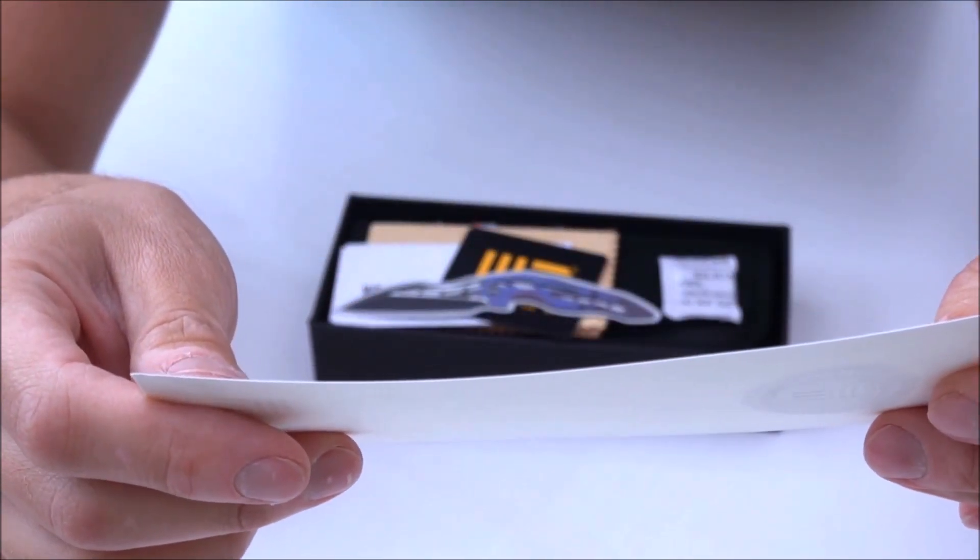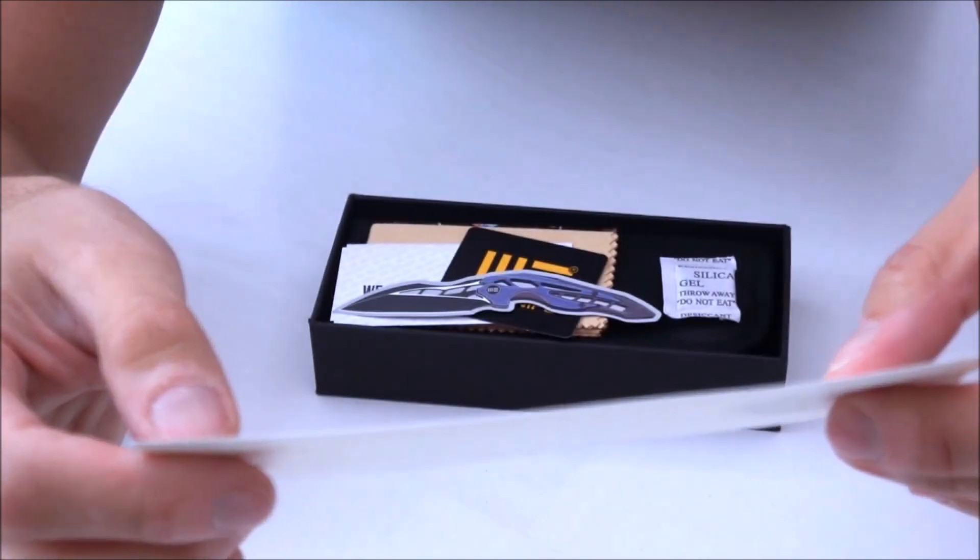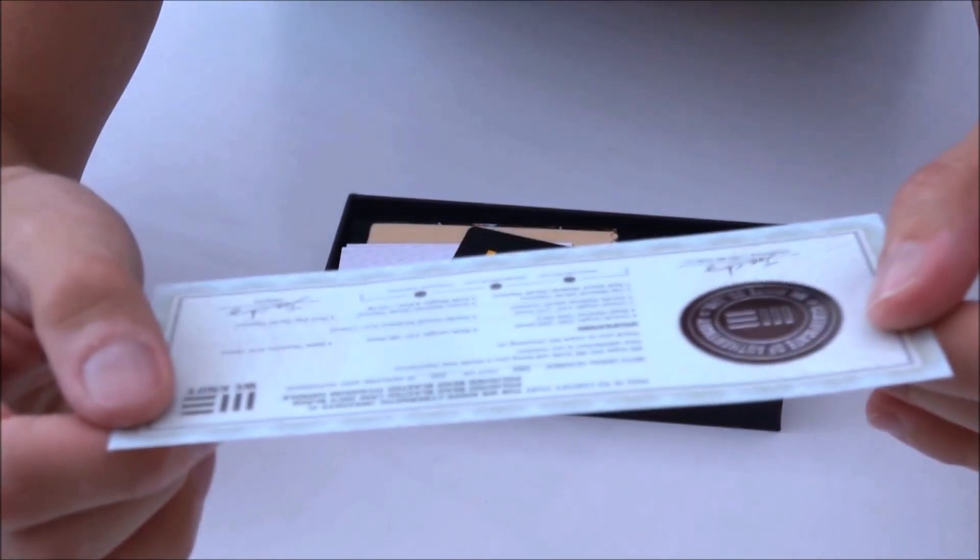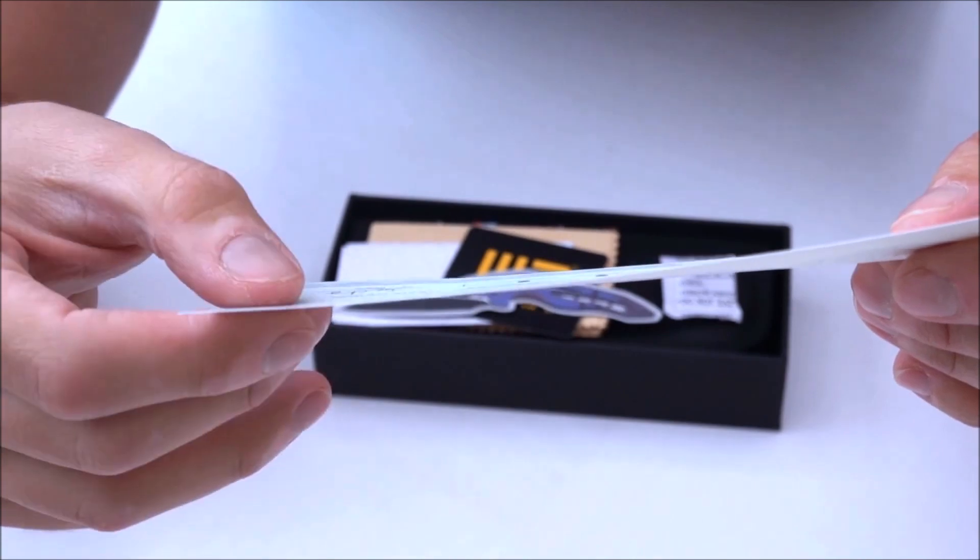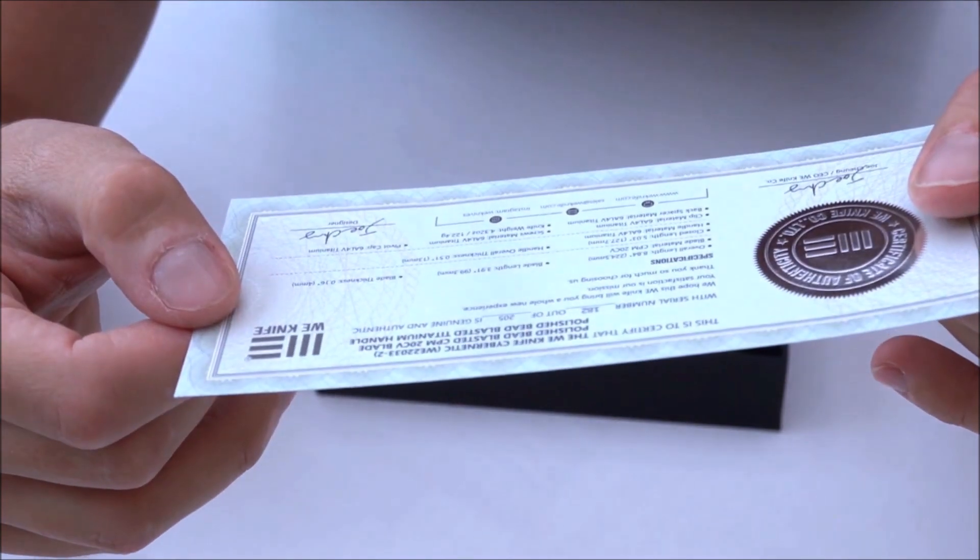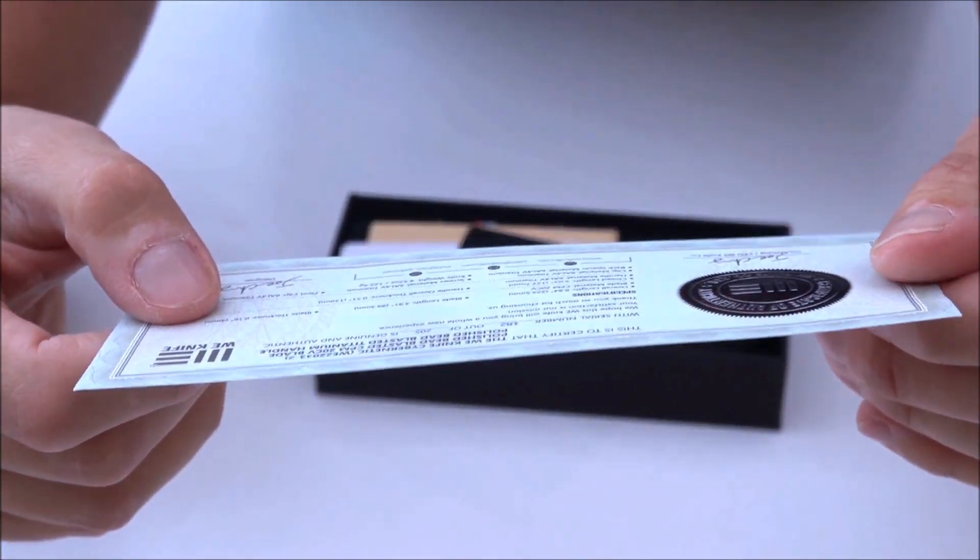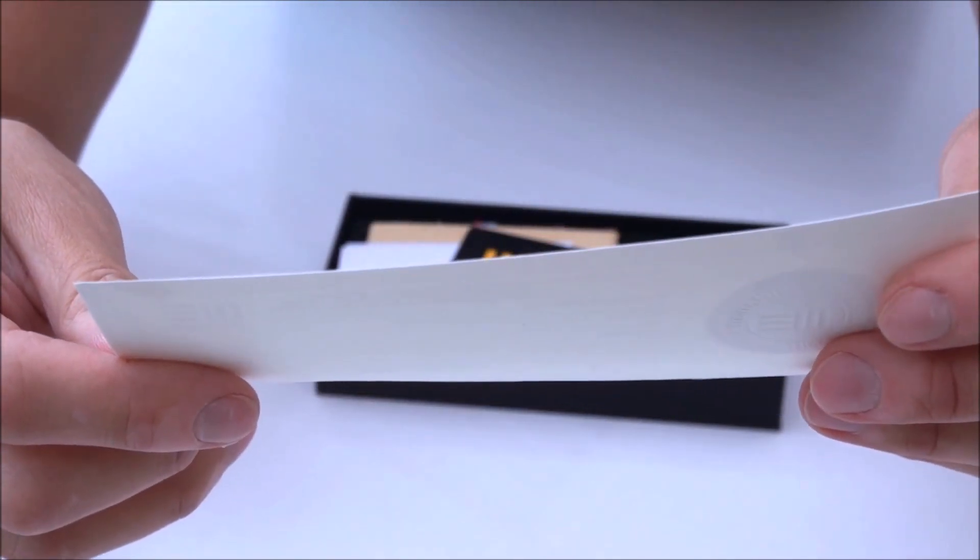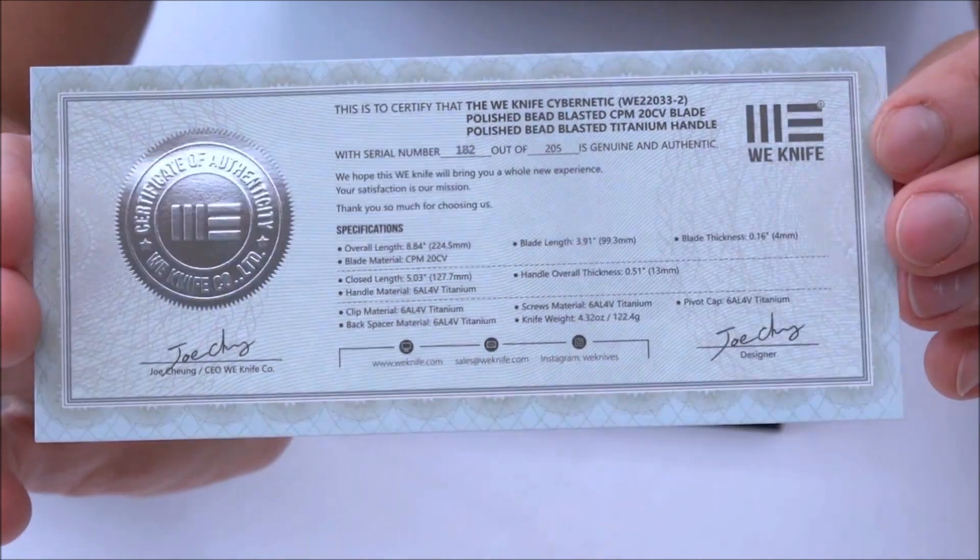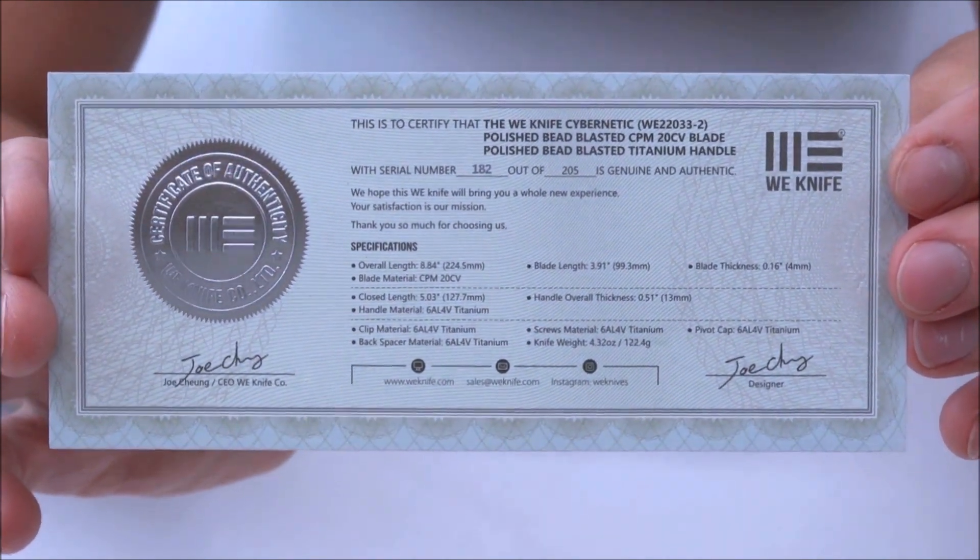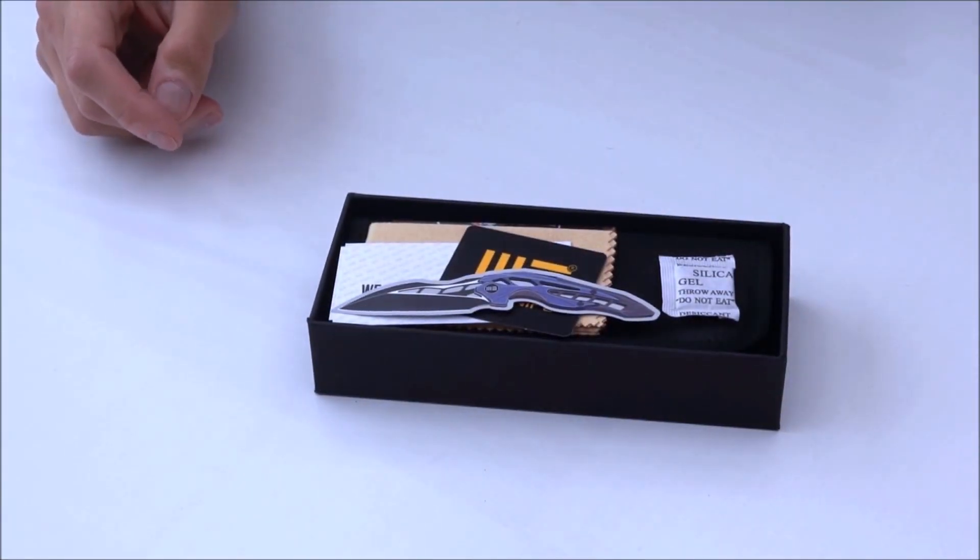And we are greeted with a certificate of authenticity as we do with all limited editions from WeKnife with this nice silver stamp here. So this states that my knife is serial number 182 out of 205. Not the most exciting serial number. I guess there aren't many numbers that are actually interesting. I guess like 1 or being top 10 or I guess 205 could be an interesting serial number. But aside from that, it doesn't matter really.